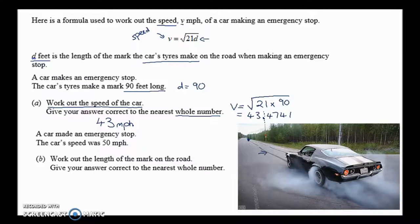Part B. Now this one's going to probably be a bit more tricky. The car made an emergency stop. The car's speed was 50, so they're giving us the speed this time, they're giving us the 50. So I'll put that in, 50 is the speed, that's that part there, and that equals the square root of, formula says, 21 times D. And it says you've got to work out the length of the tire mark on the road. So how do we work this out, how do we get to the value of D?